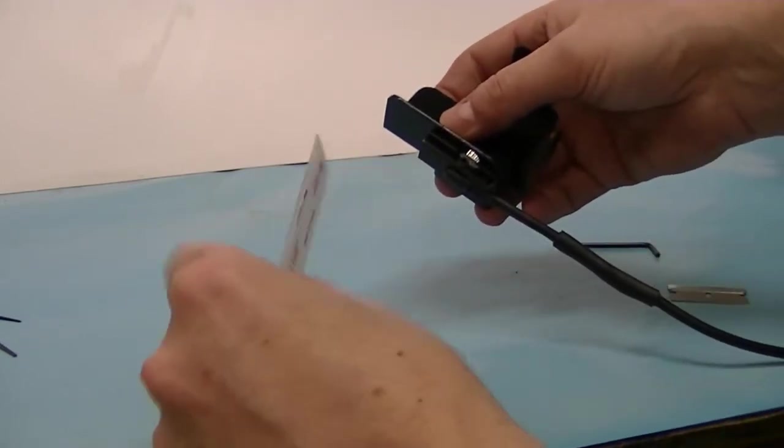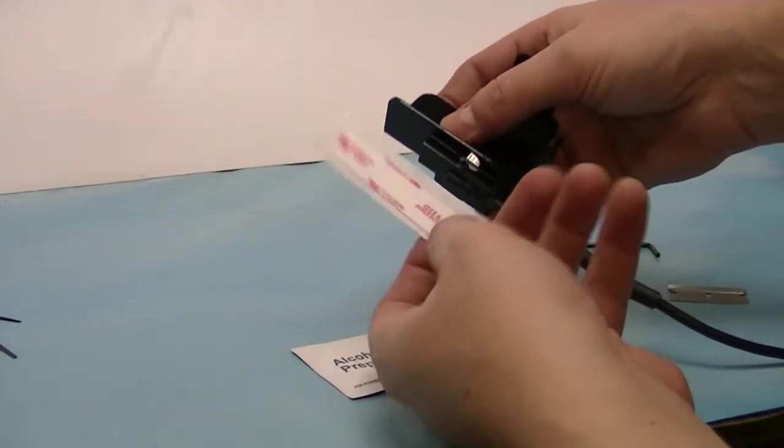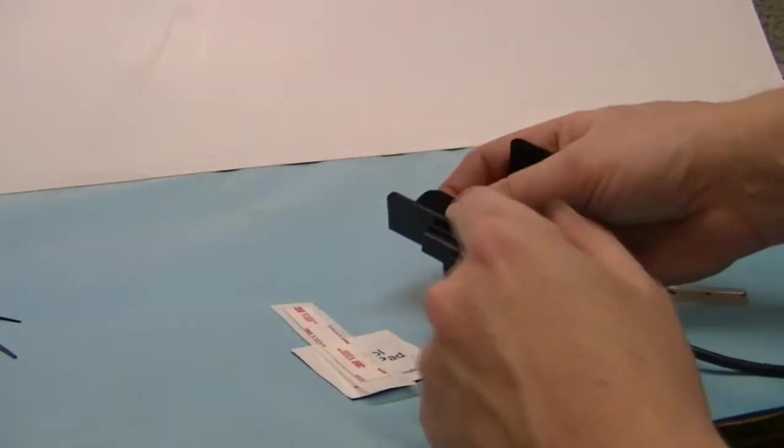Then clean the block off, clean it down with alcohol, reapply the tape, and you're ready to go for another reset.